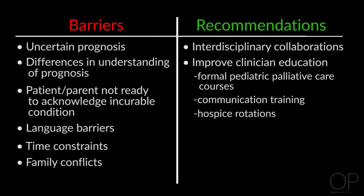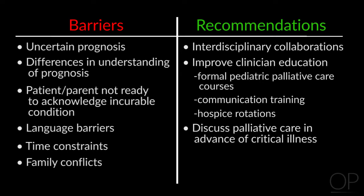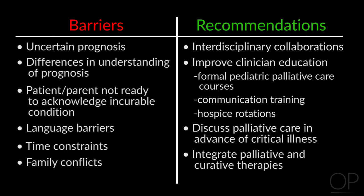Another recommendation is to discuss palliative care in advance of critical illness, because talking about treatment preferences earlier in the disease course may improve the patient and parent's ability to make these decisions later on. Furthermore, we really should integrate palliative and curative therapies. A dichotomous model that compels one to choose between curative therapies and treatment directed toward comfort is likely to be frustrating to pediatric healthcare providers, patients, and their parents. And finally, it may be helpful to accept prognostic uncertainty because it is an inherent part of medical care. An uncertain prognosis can create opportunities for enhanced communication.